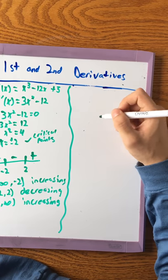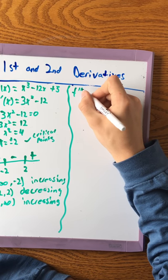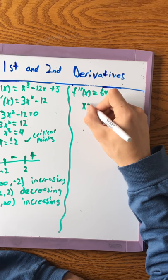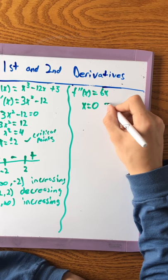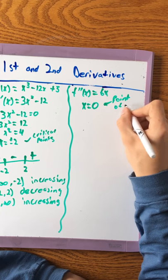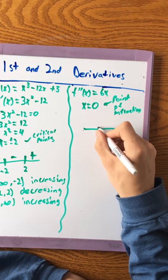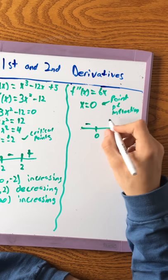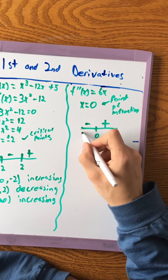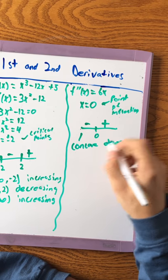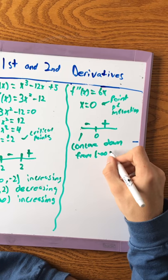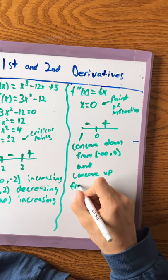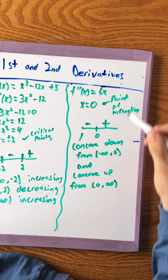Now we take the second derivative: f''(x) = 6x. Setting that equal to 0 gives x=0 as your point of inflection. Doing the number line test: plugging in -1, anything to the left is negative, anything greater than 0 is positive. So the function is concave down from (-∞, 0) and concave up from (0, ∞).